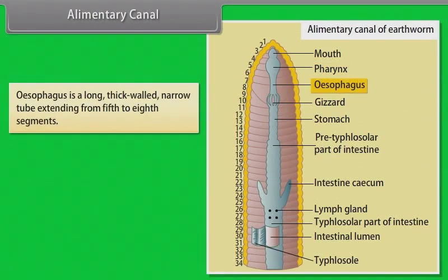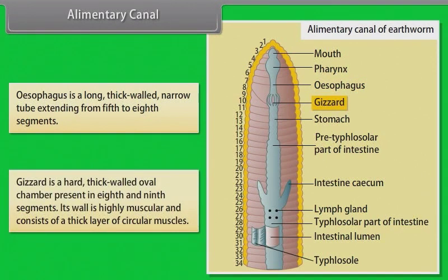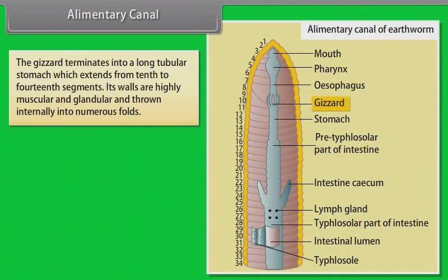The oesophagus is a long, thick-walled, narrow tube extending from the fifth to eighth segments. The gizzard is a hard, thick-walled oval chamber present in the eighth and ninth segments; its wall is highly muscular with a thick layer of circular muscles. The gizzard terminates into a long tubular stomach which extends from the tenth to fourteenth segments, with highly muscular and glandular walls thrown internally into numerous folds.